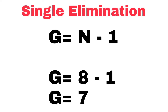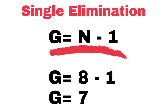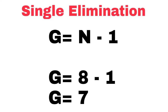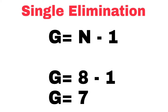In computing the number of games, we use the formula for single elimination: G = N minus 1, where G stands for the number of games, N is the number of entries, and 1 is a constant. Let's say we have 8 entries. Substituting the given numbers: G = 8 minus 1, therefore G = 7.